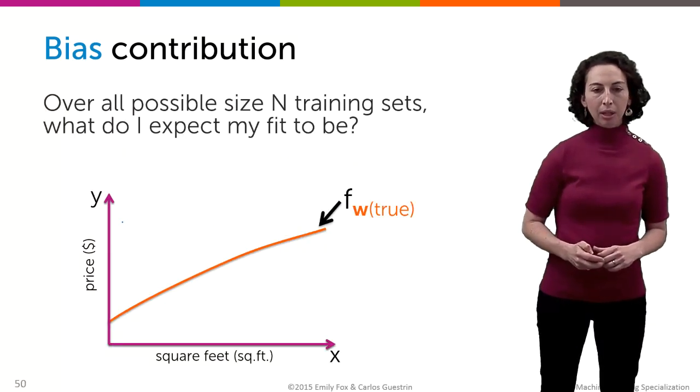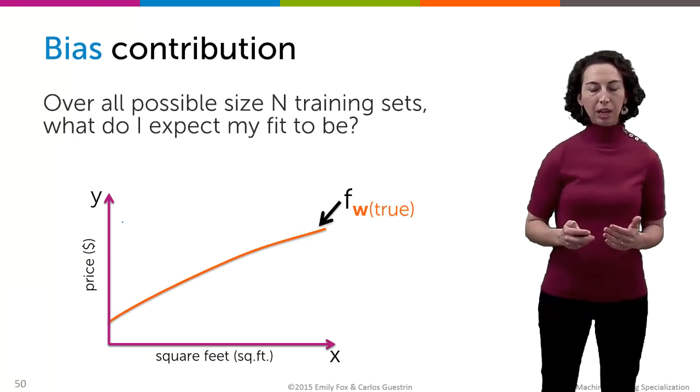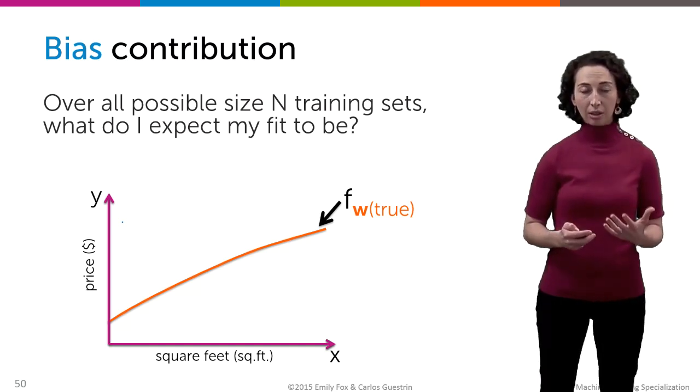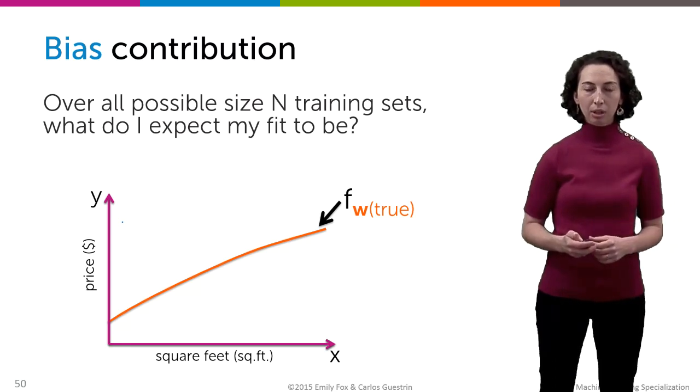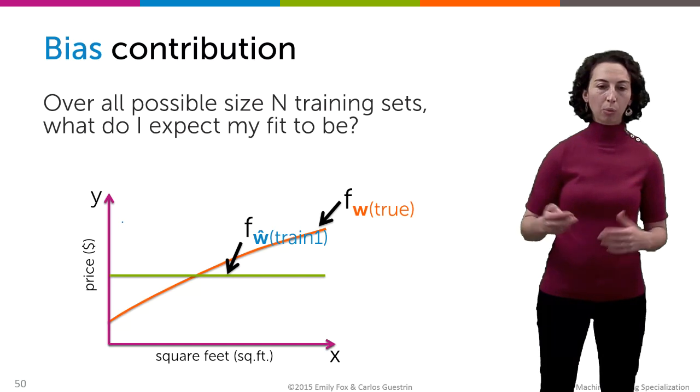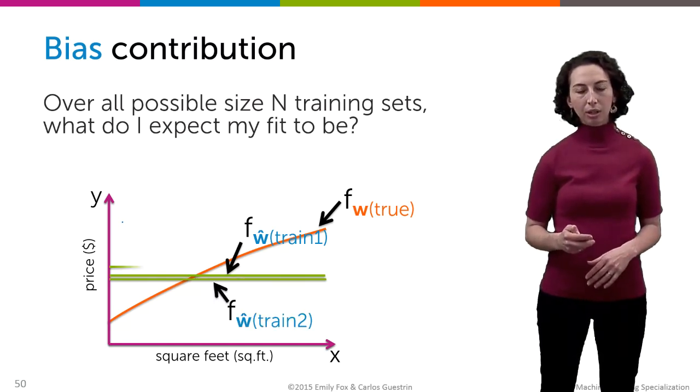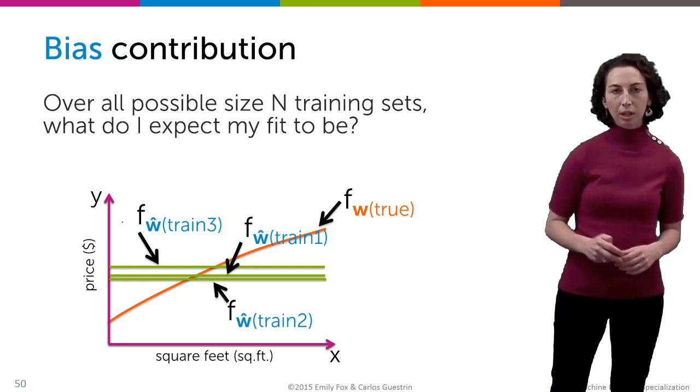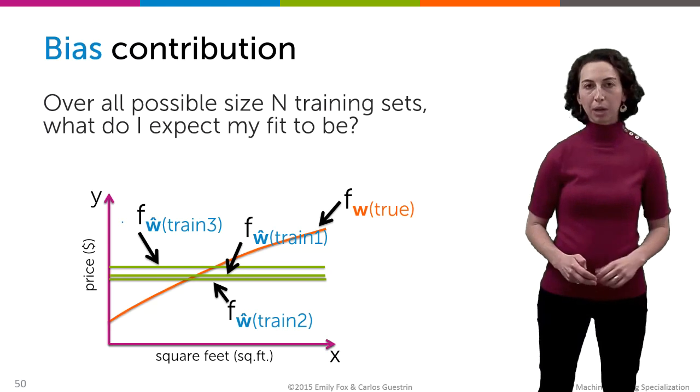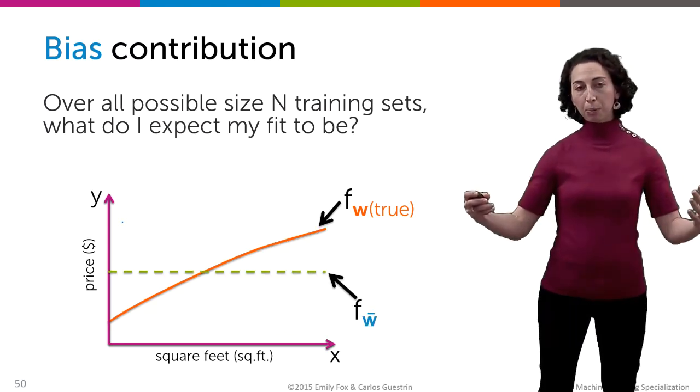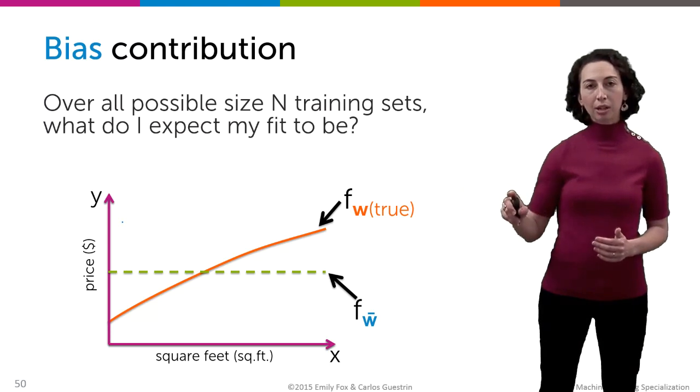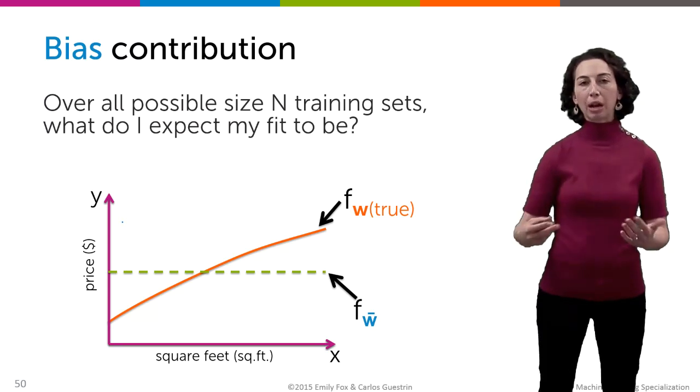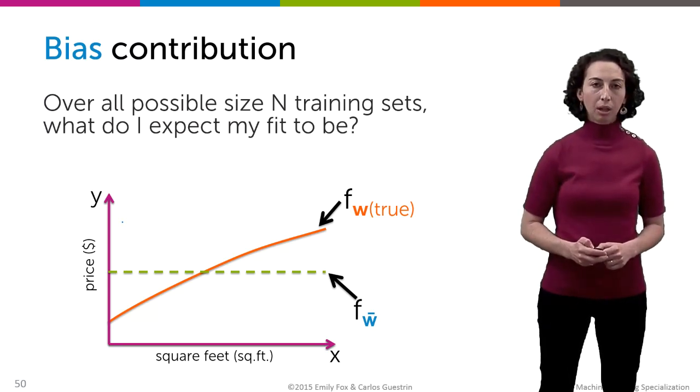Okay, but let's get back to this notion of bias. So what we're saying is, over all possible data sets of size n that we might have been presented with of house sales, what do we expect our fit to look like? So for one data set of size n, we get this fit. Here's another data set. Here's another data set, or the fits associated with those data sets. And of course, there's a continuum of possible fits we might have gotten. And for all those possible fits, here, this dashed green line represents our average fit, averaged over all those fits weighted by how likely they were to have appeared.